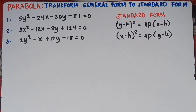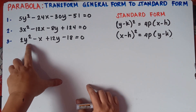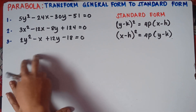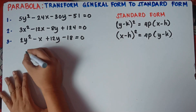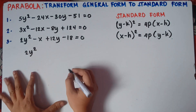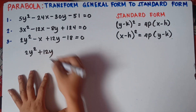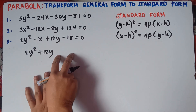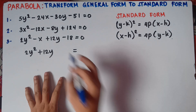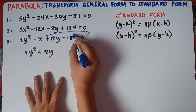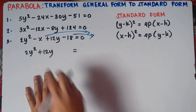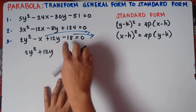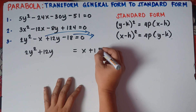Alright, let's start. Since we have y squared, our equation will be like this. The first thing to do is separate the y variables and the x variables. Copy 2y squared, copy plus 12y, and put a space for completing the square. Then we transpose x and 18 to the right side — transposing changes the sign, so negative x becomes positive x and negative 18 becomes positive 18.